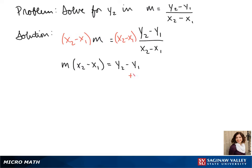so we add y1 to both sides. We get y2 equals m times x2 minus x1 plus y1.